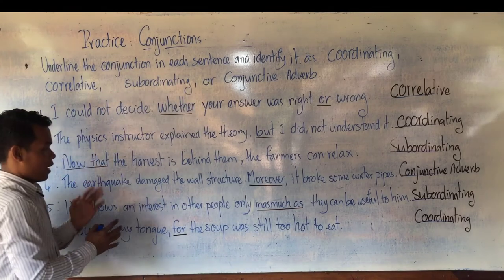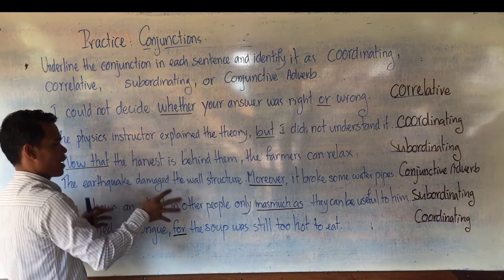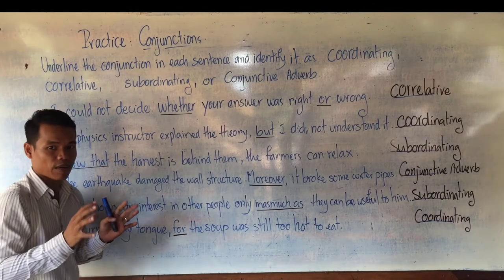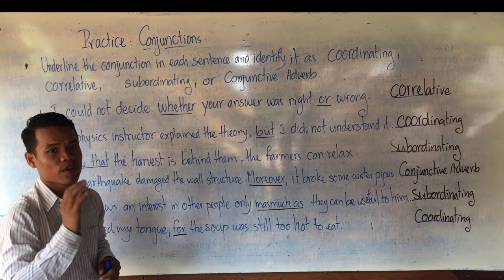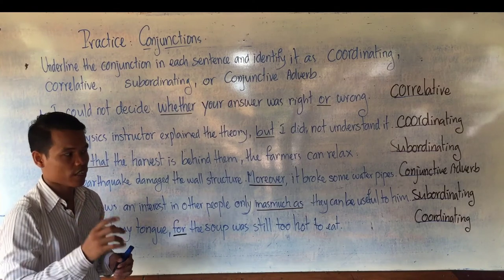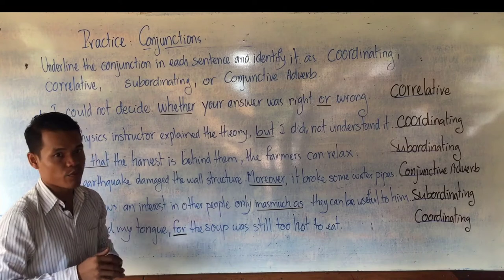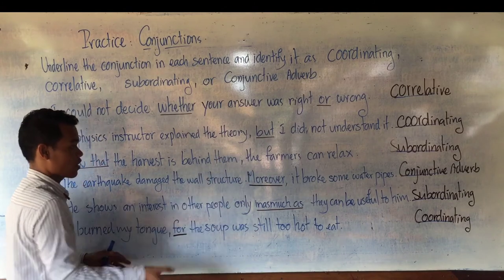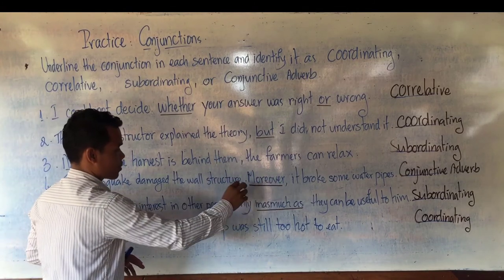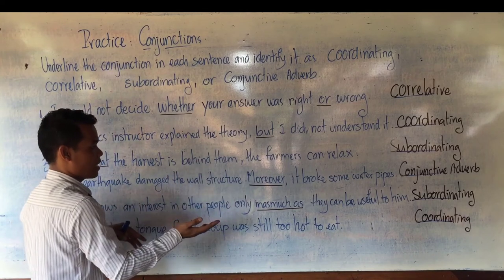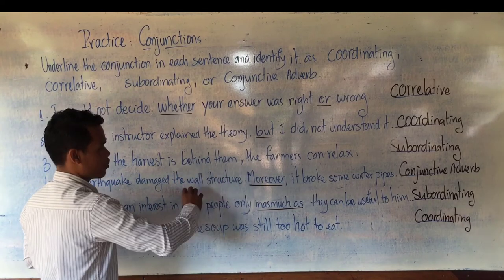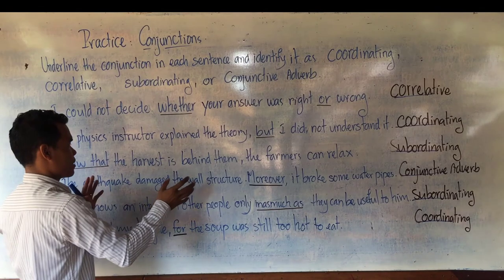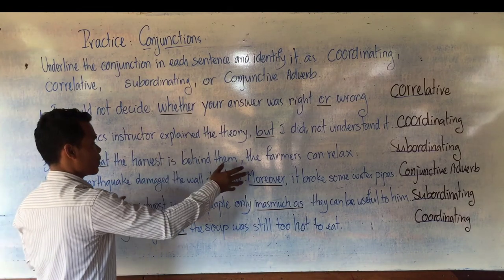Regarding subordinating conjunction, we do not think of conjunctive adverb. When talking about conjunctive adverb, remember the acronym HOTSHOT to recall ten conjunctive adverbs. Subordinating conjunction and conjunctive adverb are completely different: subordinating conjunction connects a dependent clause and an independent clause, but conjunctive adverb is used with a full stop and comma, or a semicolon and comma.